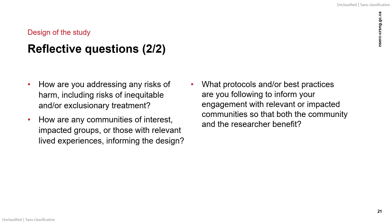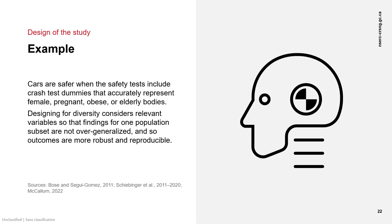How are any communities of interest, impacted groups, or those with relevant lived experiences informing the design? What protocols and or best practices are you following to inform your engagement with relevant or impacted communities so that both the community and the researcher benefit? As we saw in the earlier example of the facial recognition systems, designing a study that includes the full diversity of people that will potentially be impacted enhances the relevance and reliability of research results and leads to robust outcomes.